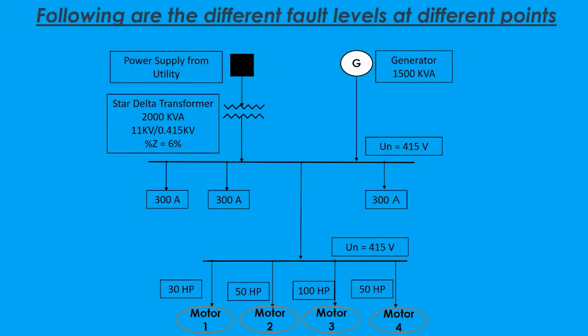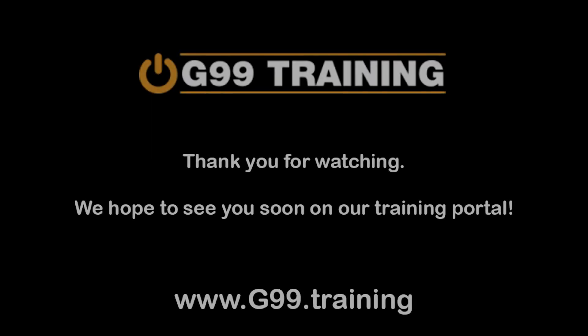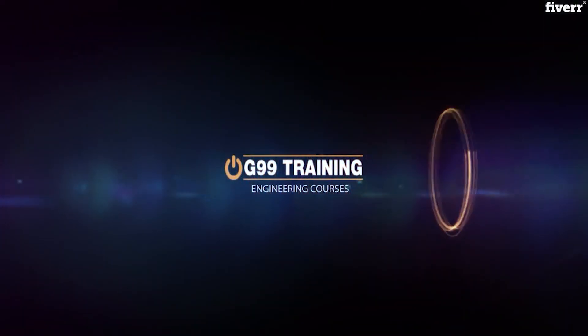The following are the different fault levels at different points: at point one, 48.7 kilo amperes; 46.1 kilo amperes at point two; and 33.5 kilo amperes at point three.